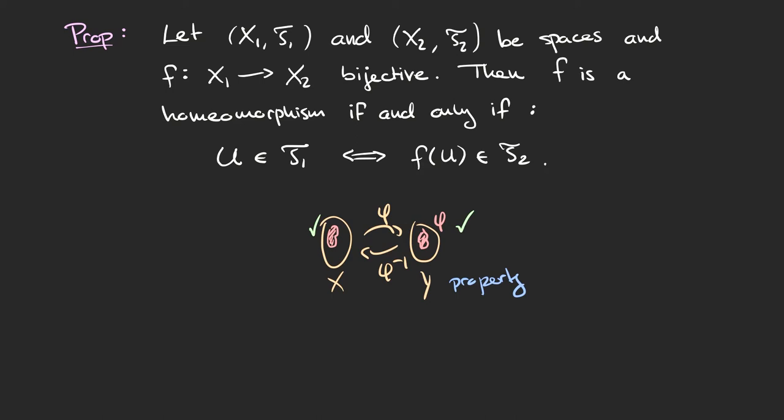Let's do a concrete example. Say I have some point in X and I want to know if it's a limit point of the red set. I know a lot about the topology on Y, so I can transport the yellow point using phi, and the red subset also using phi, to Y. Say I can determine that the image of the yellow point under phi is not a limit point of the image of the red set. Then I've established that the original yellow point is not a limit point of the original red set. Having a homeomorphism allows us to transport problems from one space to another without losing any information.